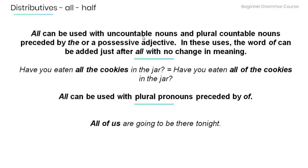'All' can also be used with uncountable nouns and plural countable nouns preceded by 'the' or a possessive adjective. In these uses, the word 'of' can be added just after 'all' with no change in meaning. For example: 'Have you eaten all the cookies in the jar?' and 'Have you eaten all of the cookies in the jar?' Both sentences have the same meaning.